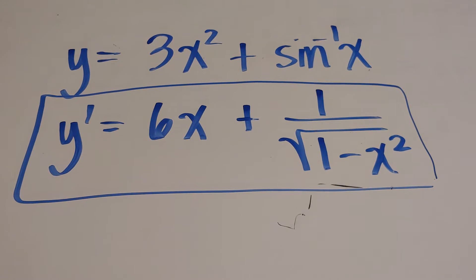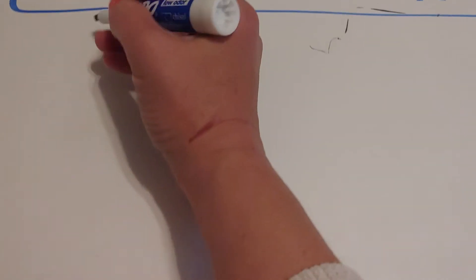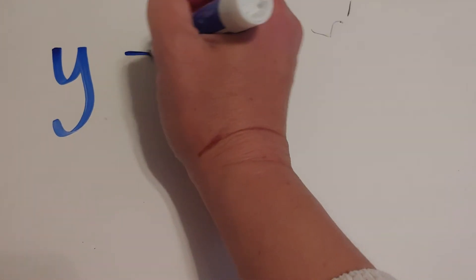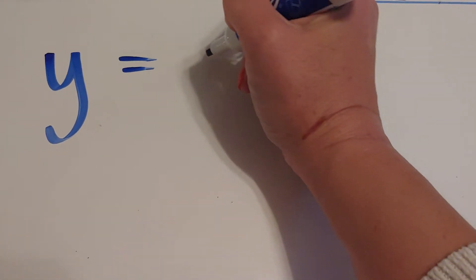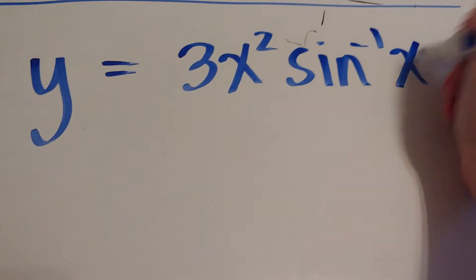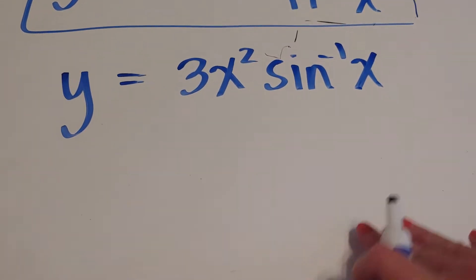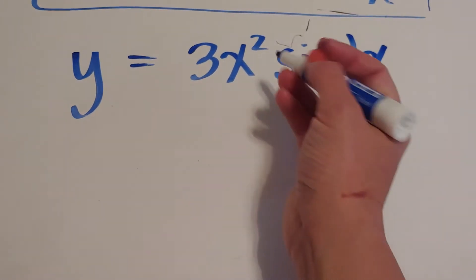Does it get harder? Of course it does. Probably the more difficult thing is if we had something that was maybe product rule. Y equals 3x squared times sine inverse of x. If this is what I have, then if I have product rule, I'm going to do u equals 3x squared.